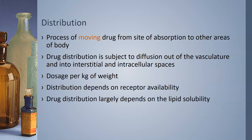Once in the bloodstream, distribution occurs — the process of moving the drug from the site of absorption to other areas of the body, ideally the target tissues the drug is intended to help. Drug distribution is subject to diffusion out of the vasculature and into the interstitial and intracellular spaces of tissues. Distribution is often a factor in calculating dosage per kilogram of body weight — for example, the dosage for an infant will be much smaller than for an adult — to avoid overdose or underdose.